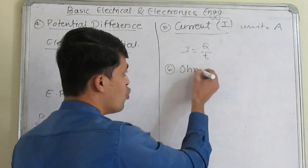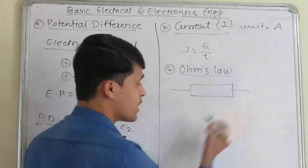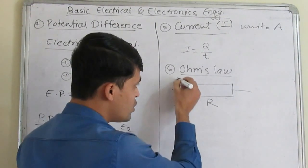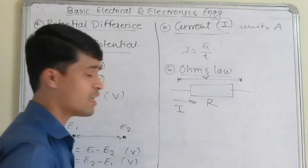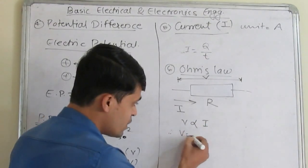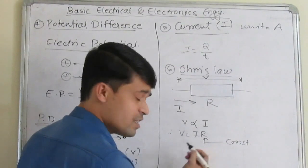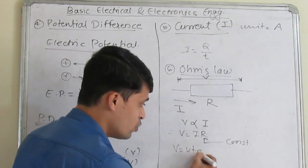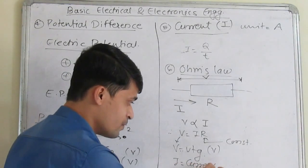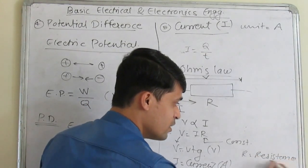Now we will see Ohm's law. What is Ohm's law? Suppose I am considering one conductor having resistance R, and current flowing through the conductor is I, and the potential difference across the conductor is V. Voltage is directly proportional to current I. Therefore V is equal to I into R, where R is the constant or resistance. V is the voltage measured in volt, I is the current measured in ampere, and R is the resistance measured in Ohm.